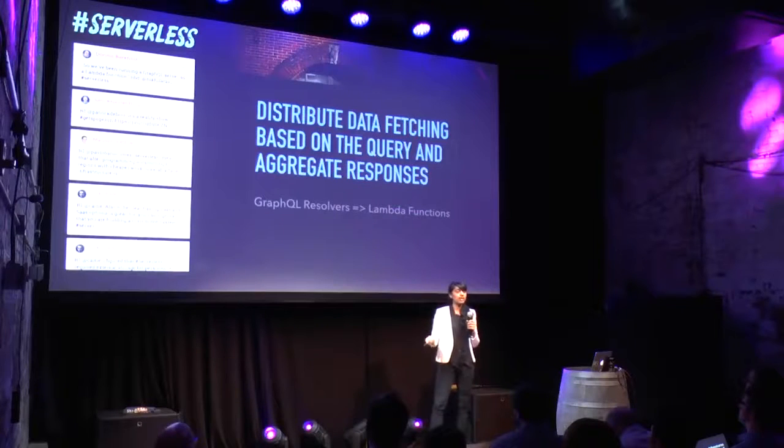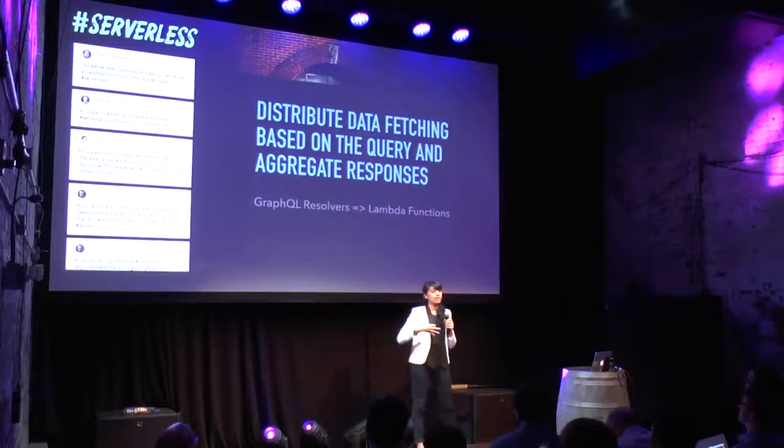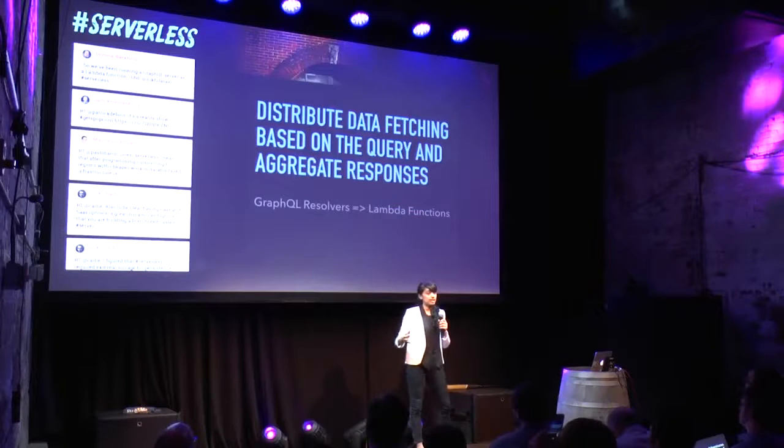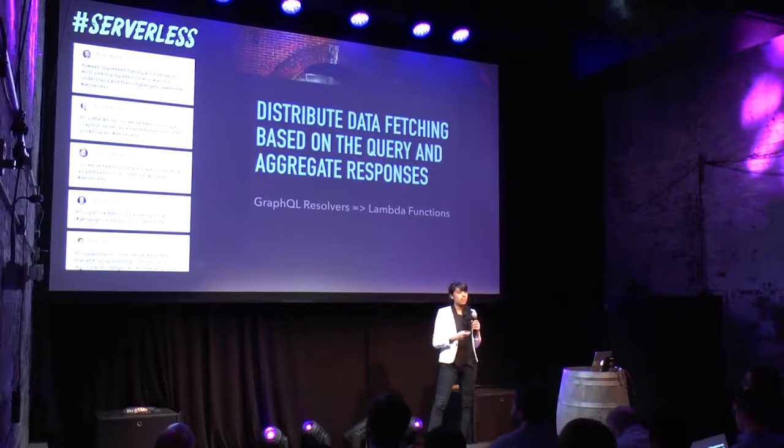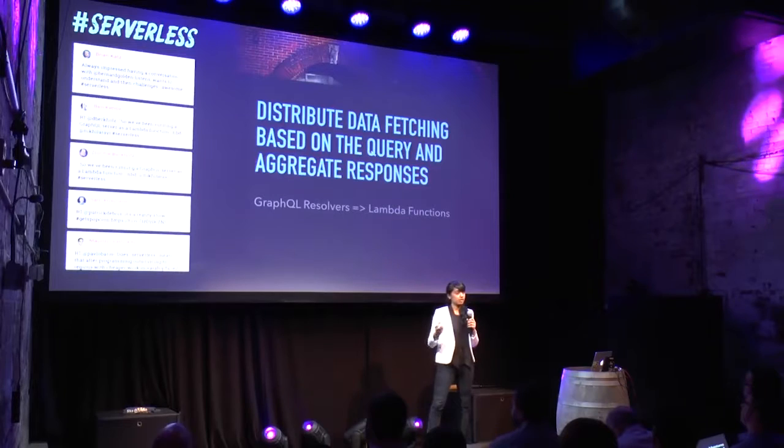GraphQL takes on the responsibility of distributing the data fetching based on the query, aggregating the results, and then sending this back to the client. For each type in your GraphQL schema, you can specify a resolve function, and this resolve function actually fetches the data for that type. So each of these resolvers can map to a separate Lambda function.